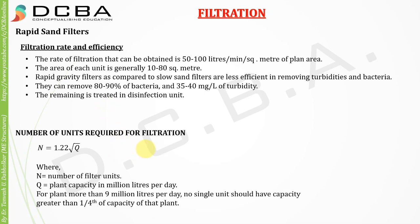The number of rapid sand filter units required is given by an empirical formula: N = 1.22 × √Q, where Q is the plant capacity in million liters per day. This gives you the number of rapid sand filters required in a particular filtration plant.